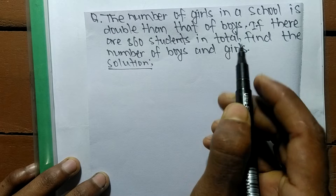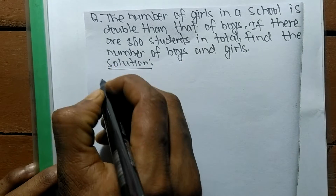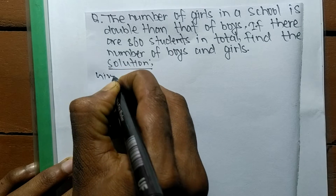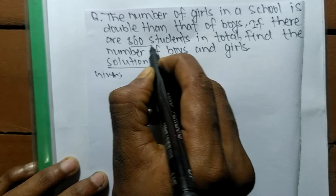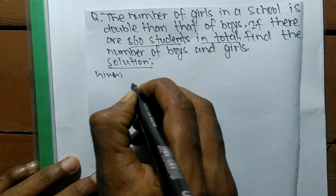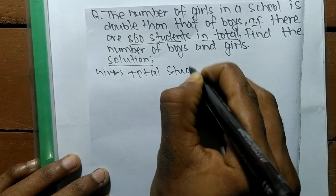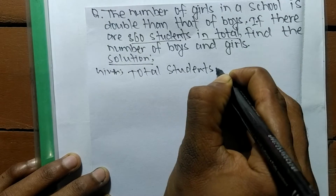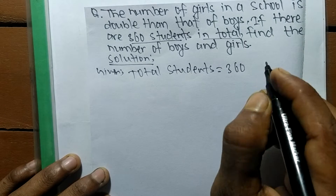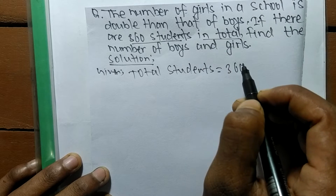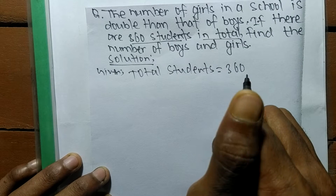For this solution, first of all we have to write down what the given quantities are. The only given information is total students equal to 360. We have to find out the number of boys and girls among those 360 students.